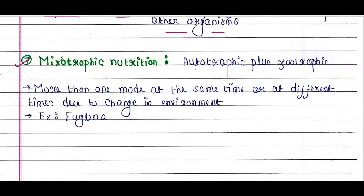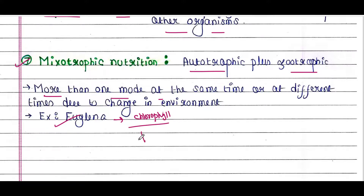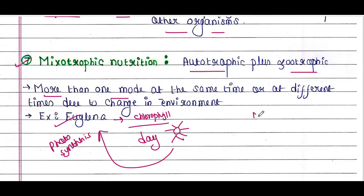Next type is mixotrophic nutrition, which is an interesting combo process of autotrophic and zootrophic nutrition. These organisms have more than one mode of nutrition, for example Euglena. Euglena have chlorophyll, so in daylight when there is sun, they can make their own food via photosynthesis. But at night when they can't do photosynthesis, they act as predators and kill prey, undergoing zootrophic nutrition.